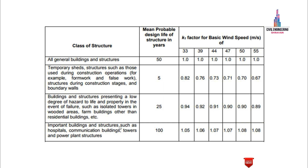The fourth class covers important buildings and structures such as hospitals, commercial buildings, towers, and power plant structures. We consider their design life as 100 years, with K1 values of 1.05, 1.06, 1.07, 1.07, 1.08, and 1.08 for the respective basic wind speeds. These are the risk coefficient factor values we need to consider based on the building class.